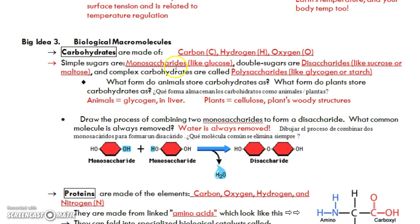The simplest sugars are monosaccharides. Glucose is an example there. Double sugars are disaccharides. That prefix di- means two. Mono means one. Di- means two. Poly- means many. So if you stick a whole bunch of little sugars together, you get a complex carbohydrate, polysaccharide.